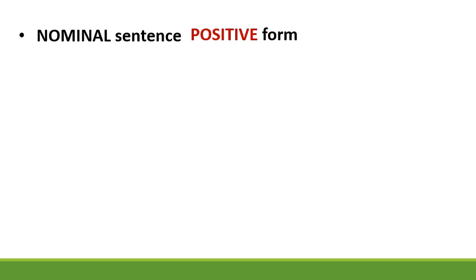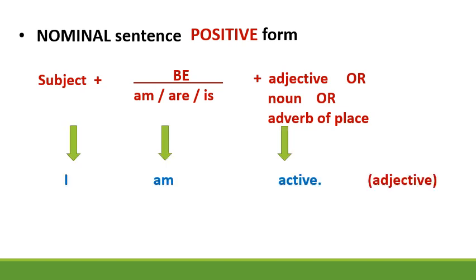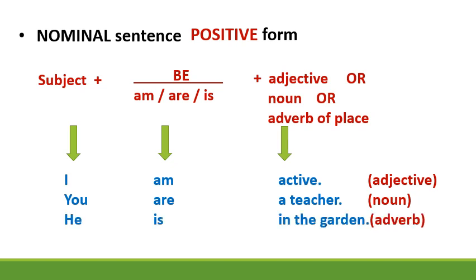Nominal sentence positive form. Here are the elements of a nominal sentence in the positive form: subject plus be (am, are, is) plus adjective, or noun, or adverb of place. For example: I am active — this uses an adjective. You are a teacher — this has a noun. He is in the garden — this has an adverb of place.